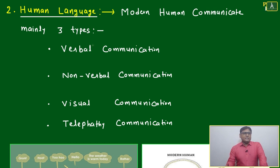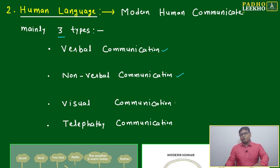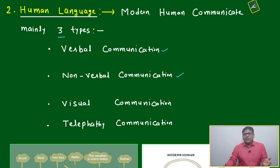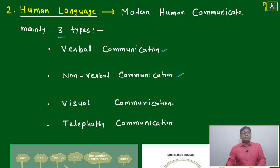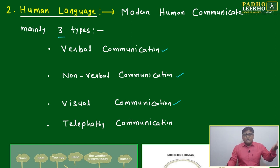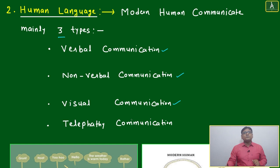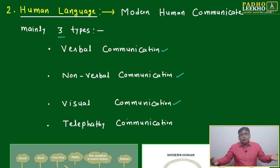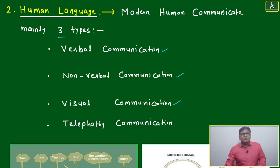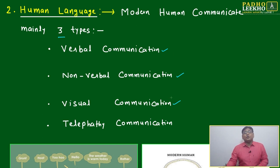We have the capability — we can say mainly three types we are using: verbal communication, nonverbal communication, and visual communication. Nonverbal communication has a very wide role. Once we understand about speaking or body language, it will be much more helpful. The combination of these three will make very effective communication.